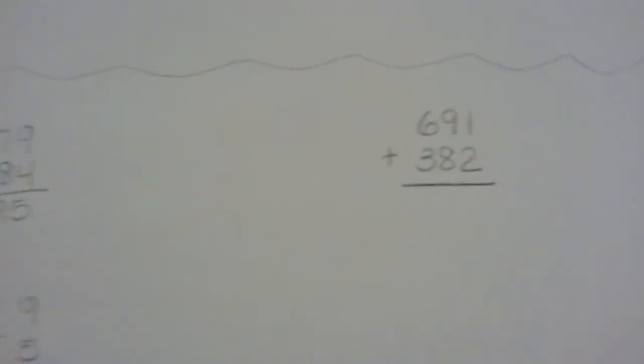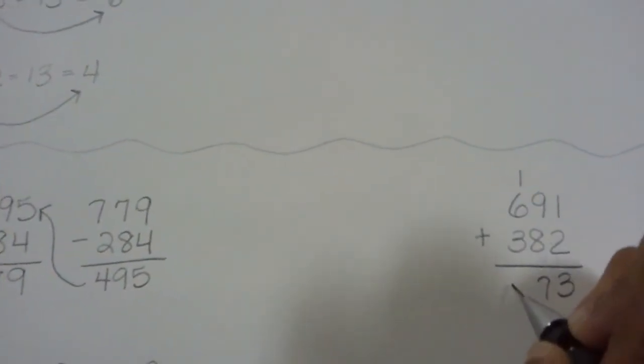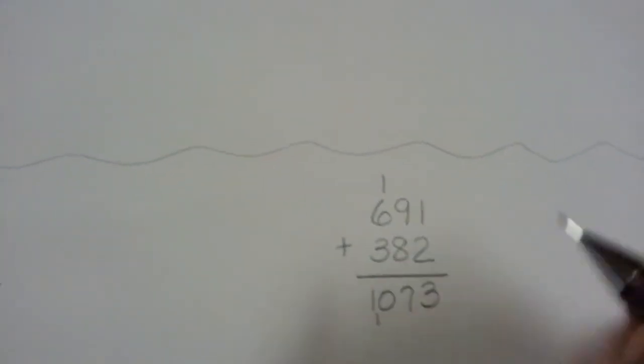Let's look at another one. 691 plus 382. I'm going to add it like normal. 1073. Now I'm going to use digital root to check.